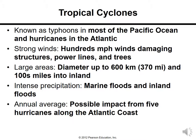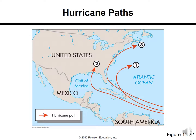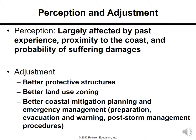Tropical cyclones are known as typhoons in most of the Pacific Ocean and hurricanes in the Atlantic. Strong winds of hundreds of miles per hour damage structures, power lines, and trees. They can be up to 600 kilometers in diameter and extend 100 miles inland. Intense precipitation, marine floods, and inland floods can occur, with an annual average of about five hurricanes impacting the Atlantic coast. Adjustments include better protective structures, better land use zoning, coastal mitigation planning, emergency management including preparation, evacuation and warning, and post-storm management procedures.